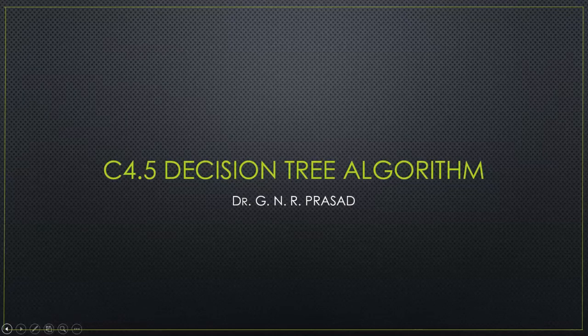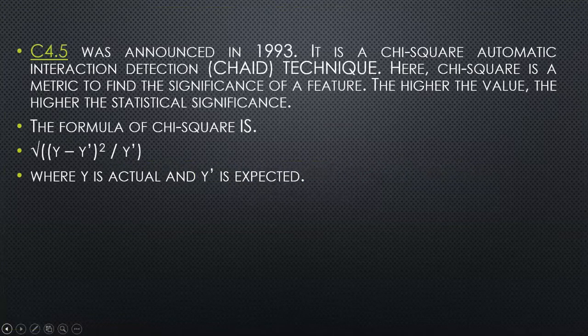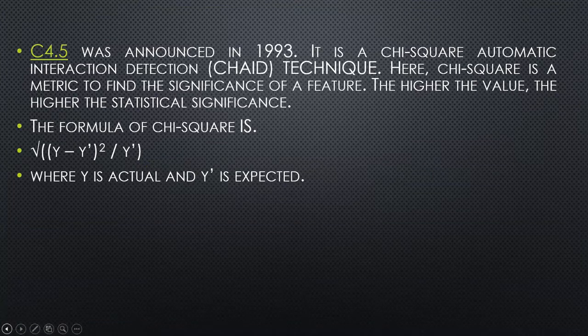Welcome to this class. This class is all about the CHAID algorithm, that is C4.5. In C4.5, the C stands for Chi-square and 4.5 is just a version number. It is actually Chi-square Automatic Interaction Detection, also called CHAID. Chi-square is a metric to find the significance of a feature.